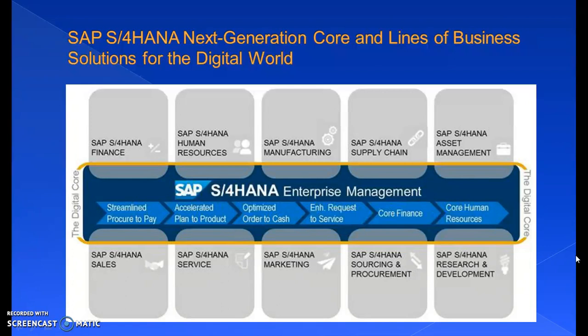SAP S4 HANA covers many dimensions. Initially when SAP S4 HANA was first launched, the finance update was released first, and later updates were released for all various areas including SAP S4 HANA Finance, Human Resources, Manufacturing, Supply Chain, Asset Management, Sales, Services, Marketing, Sourcing and Procurement, and Research and Development.